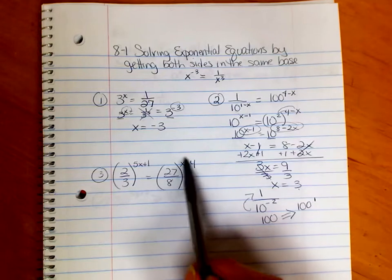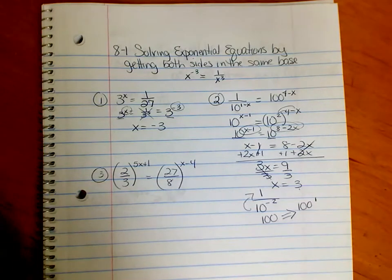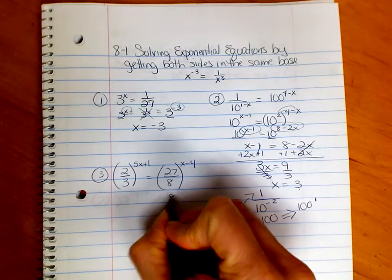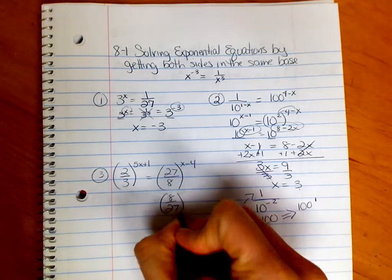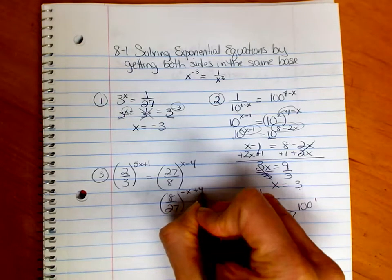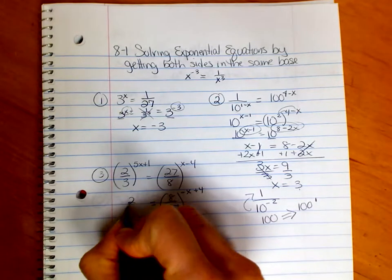Remember how we flip it over. We've got to change the exponent to negative. So I can rewrite this as 8 over 27, as long as I change the signs on my exponent. So I'd have to change both of them. That's the first thing I want to do.